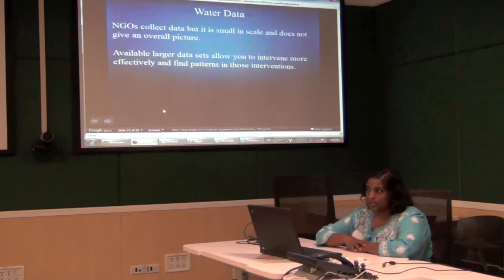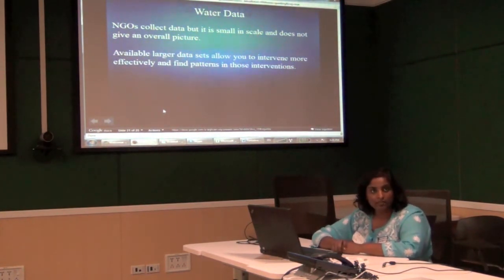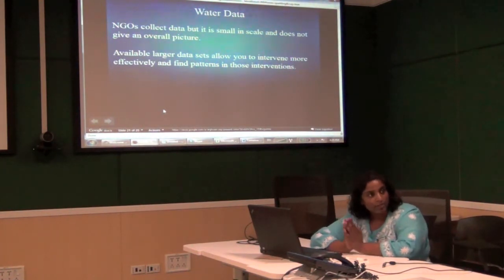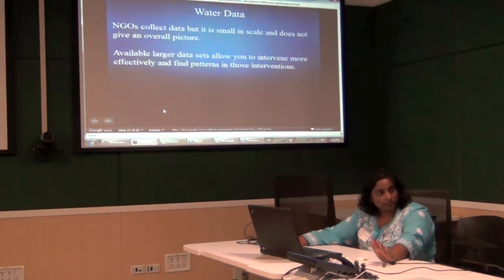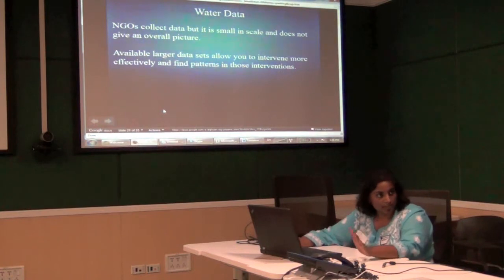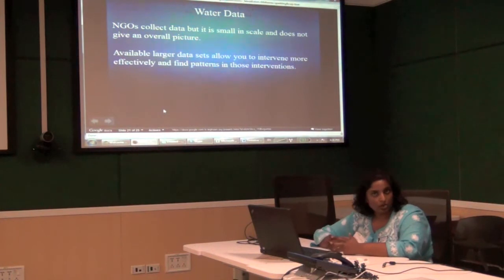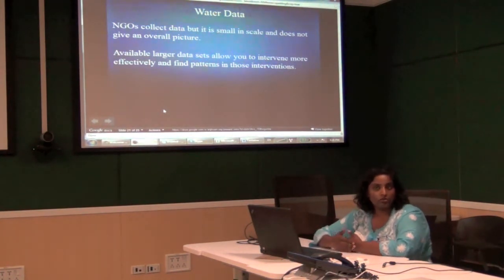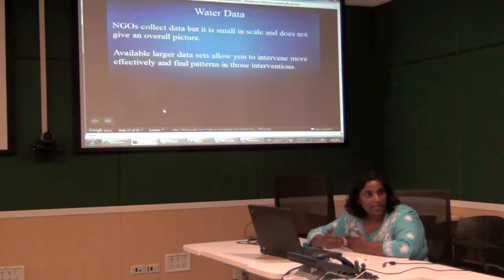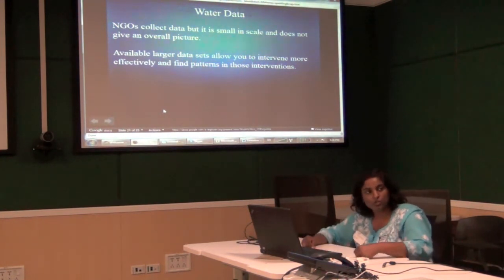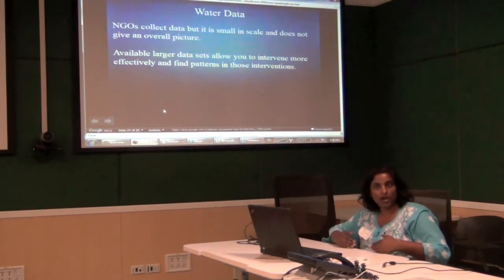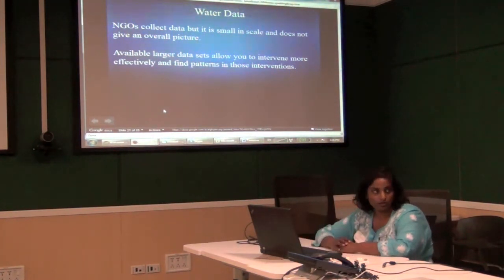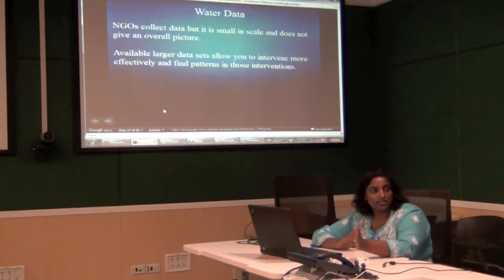The real problem with water data specifically is that government has large datasets across the country but they're not very granular. NGOs collect very granular data but not at large scale. For instance, government releases state-wide, district-level averaged data, while an NGO might collect highly granular data for a couple of districts. You can't compare the two — ground-truthing of government data can't really happen effectively because the methodologies are so different and the view is so broad.